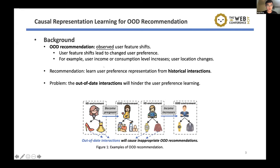As introduced in the last slide, learning user preference is a core task, and we usually learn it from historical interactions. If some user feature changes — for example, if the user becomes pregnant or the user's income increases — the user preference will change accordingly. The out-of-date historical interactions will then become counterproductive for learning user preference, causing poor OOD recommendations and hindering user preference learning.